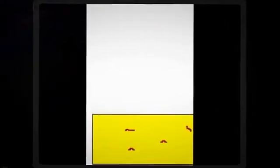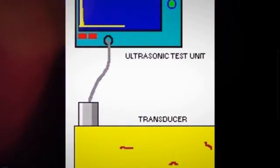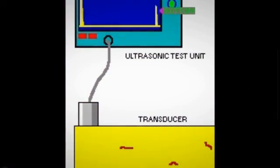The ultrasonic waves are generated by a transducer, which converts electrical energy into mechanical vibrations. These vibrations travel through the material until they encounter a boundary between two different materials or a defect such as a crack or void.